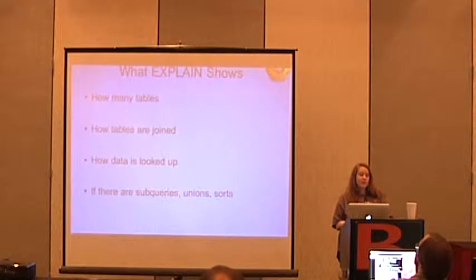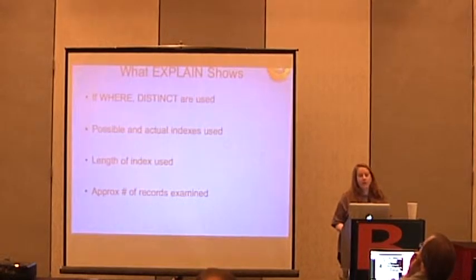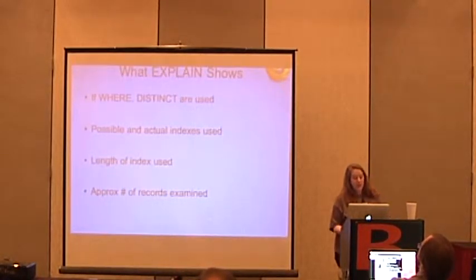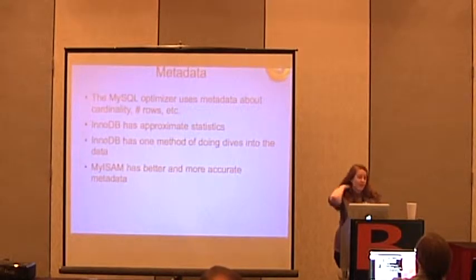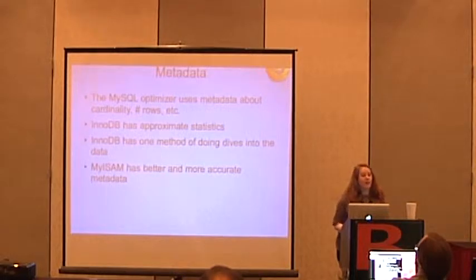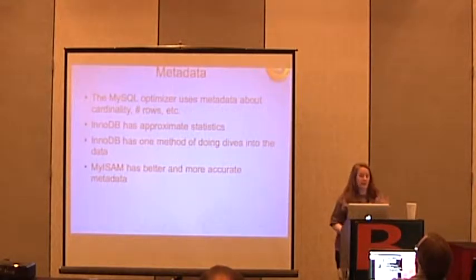EXPLAIN shows how many tables are used, how many tables are joined, how data is looked up, and if there are subqueries, unions, and sorts. It shows if you use a WHERE clause, if you use DISTINCT, the possible and actual indexes used, the length of the index actually used, the approximate number of records examined, and metadata about cardinality. If you are using a storage engine like InnoDB that has approximate metadata, you'll get a less optimal plan than with MyISAM, which has exact data — though MyISAM has its own problems.